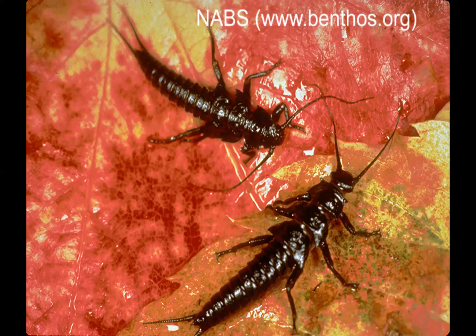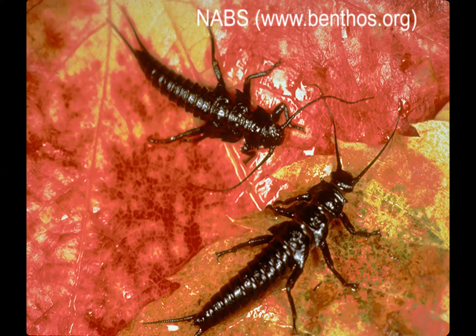Giant stoneflies called pteronarcids can reach two to three inches in length and live on leaf packs, breaking down leaves and twigs. They're an excellent food source and a strong indicator of good water quality. Their gills are right underneath the thorax — very exposed, just like a Helgramite. Sediment can clog those gills and kill them. They need nice, clear, cold running water with lots of oxygen — in fact, if placed in a pan of water, they'll do push-ups to get more oxygen.